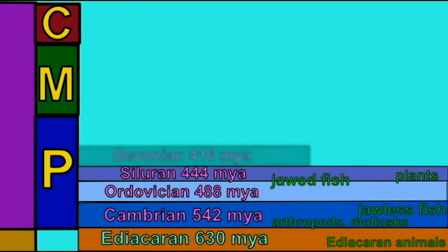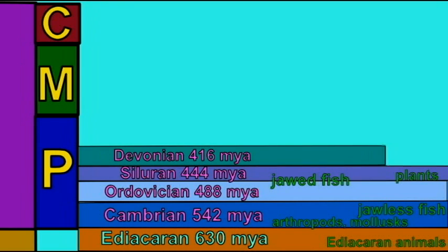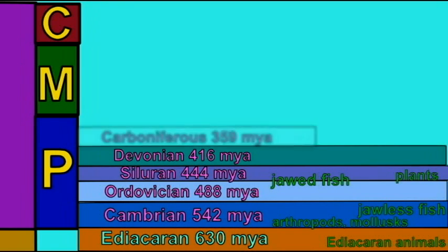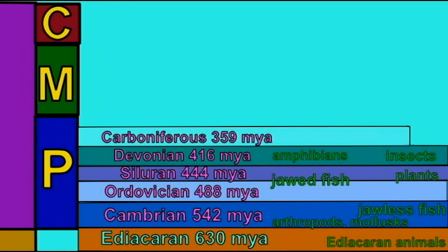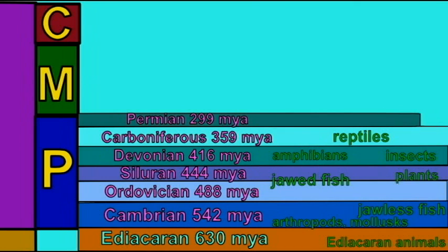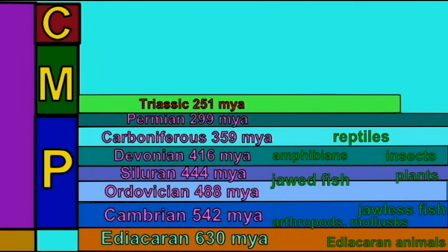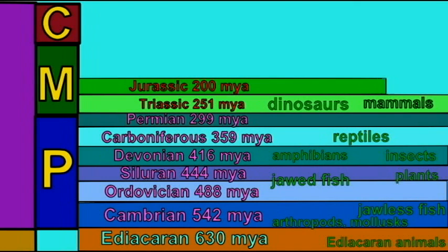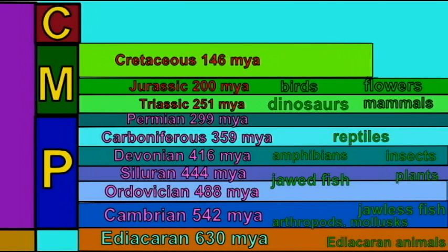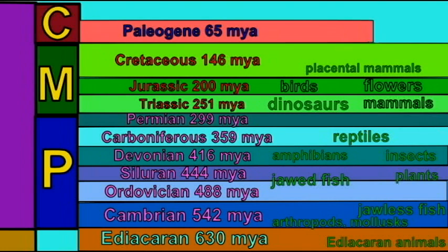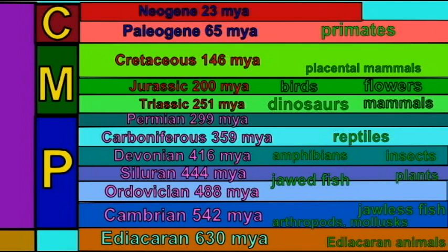The last 65 million years are known as the Cenozoic era, also known as the Age of Mammals. After the demise of the dinosaurs, mammalian lineages have been able to diversify, and the groups of modern organisms have reached the state we see today.